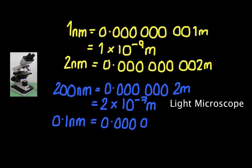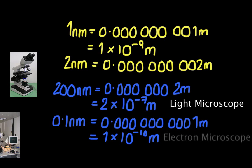If we continue here, 0.1 nanometres is 1 times 10 to the minus 10 metres. And 0.1 nanometres was the resolution of our electron microscope.